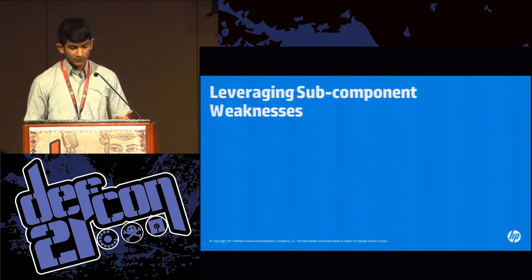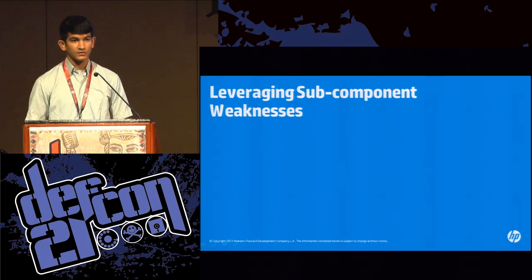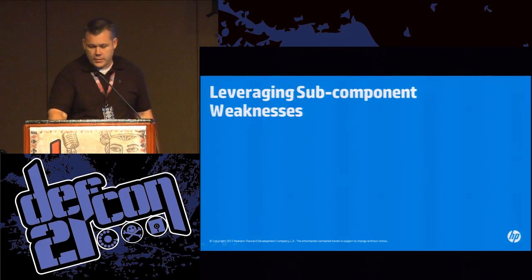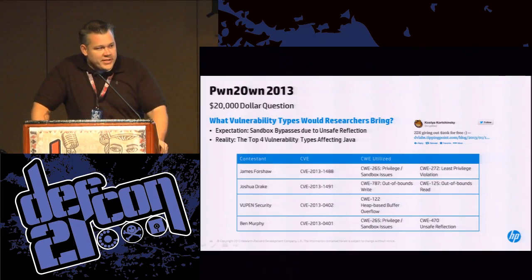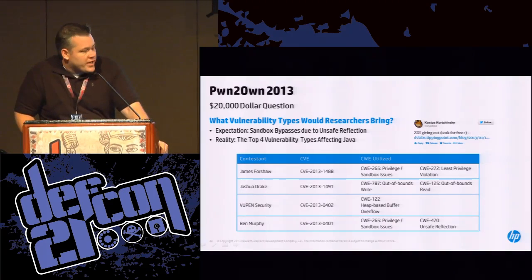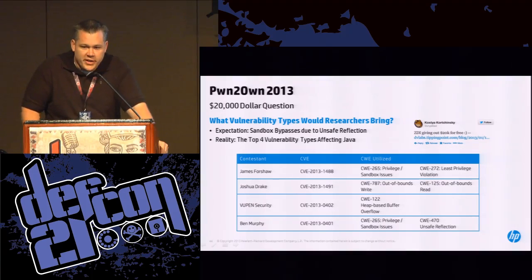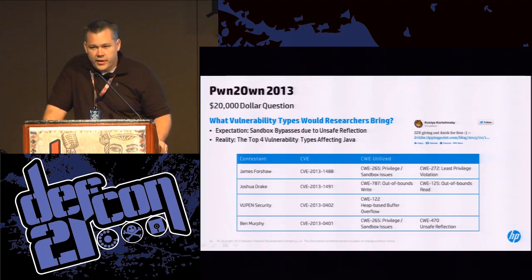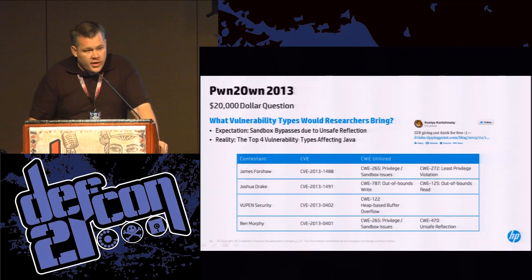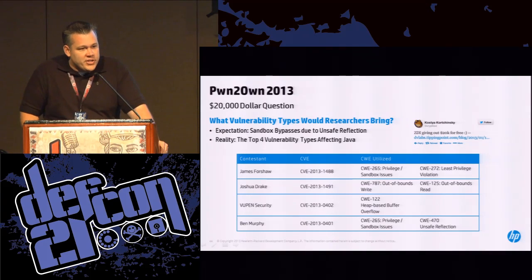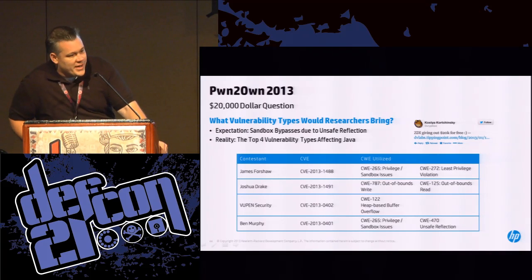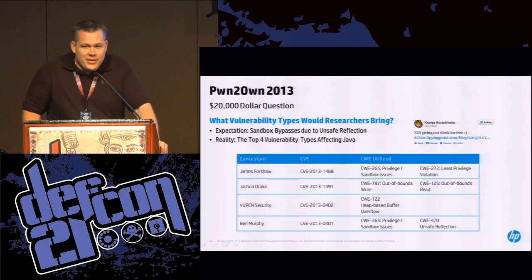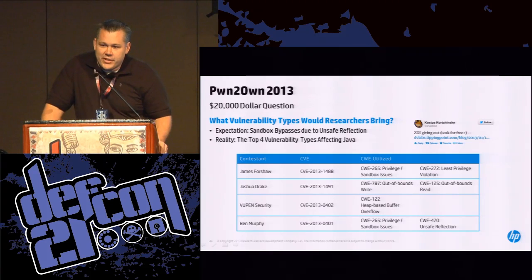Now let's look at how people are actually using these bugs in Pwn2Own. This year when we were organizing Pwn2Own, we decided to expand the scope of the competition and include browser plug-ins — mostly because they were being used by malware and in targeted attacks — so we added Flash, Reader, and of course Java. Some people thought we were making it too easy; Kostya's quote was 'ZDI is giving out $20,000 for free,' which at the time felt like that because there was a lot of zero-day activity going on in Java.